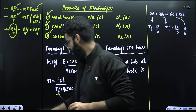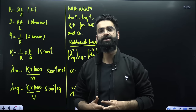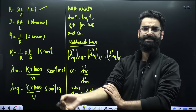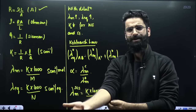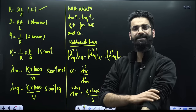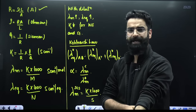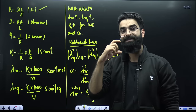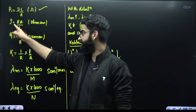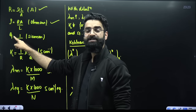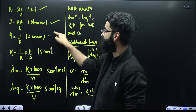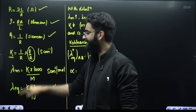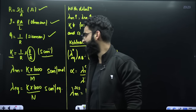Regarding conductance: resistance of an electrolytic conductor is R = ρL/A, where L is the distance between electrodes and A is the cross-sectional area of the electrode inside the solution. Conductance is the inverse of resistance; its unit is Siemen. Conductivity κ = (1/R) × (L/A), where L/A is called the cell constant. The unit of κ is Siemen cm⁻¹.